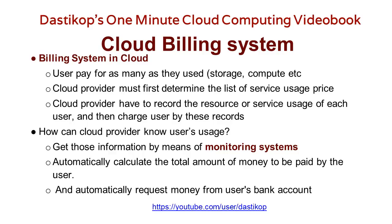The cloud provider must first determine the list of services offered and their prices. For example, a company like Google may say storage is available at a particular price and compute is available at another price. The cloud provider has to record the resource or service usage of each user and then charge them based on these records. For example, if it is storage then it may be measured in terms of MBs; if it is compute then it may be in terms of computational power.